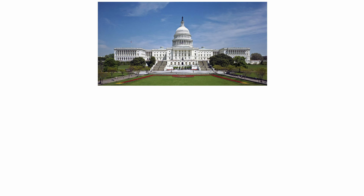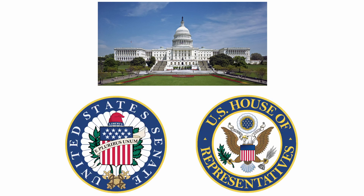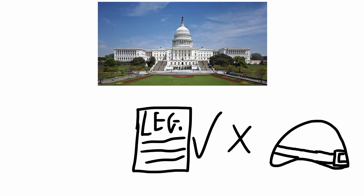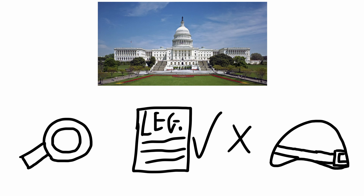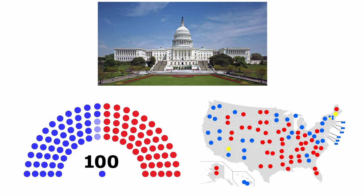Similarly, the Supreme Court can rule a law or an executive order as unconstitutional. The legislative branch, or Congress, is composed of the House of Representatives and the Senate. It has the power to enact laws, declare wars, and conduct special investigations, among other things. The Senate is made up of 100 senators — two from each of the 50 states — and senators can serve an unlimited number of six-year terms.